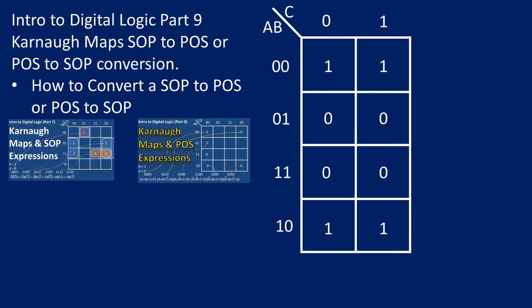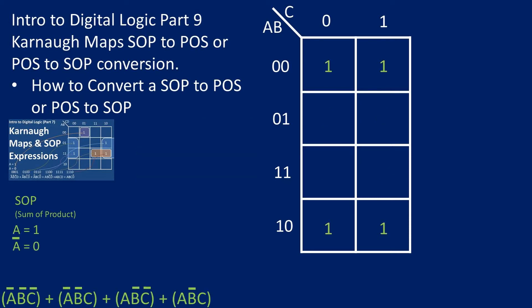We have a SOP expression where A equals one and A with a line over top equals zero. Converting these values to binary, we have the displayed digits. Now to get these values into the Karnaugh map.